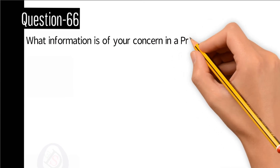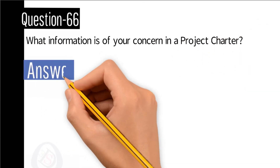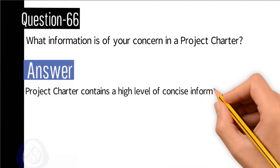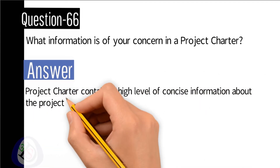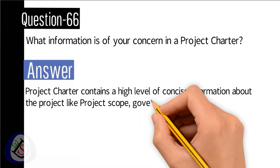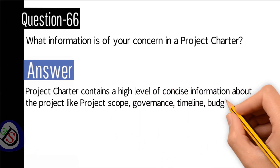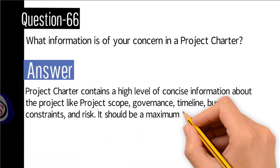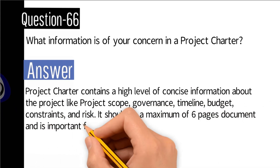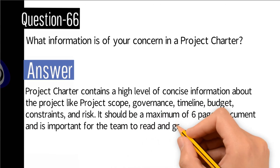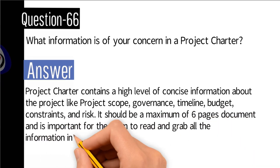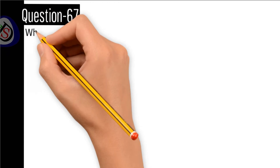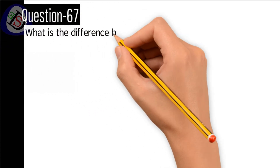Question number 66: What information is of your concern in a project charter? Answer: A project charter contains high-level, concise information about the project — such as project scope, governance, timeline, budget, constraints, and risks. It should be a minimum of six pages. It is important for the team to read and absorb all information included in it.